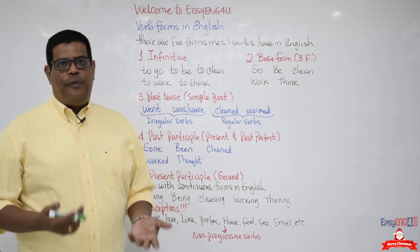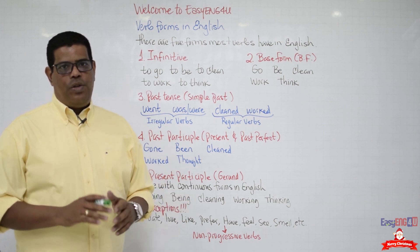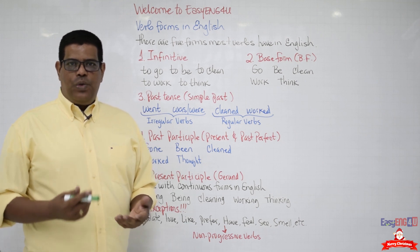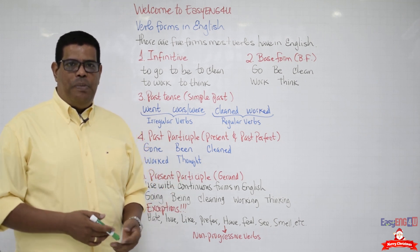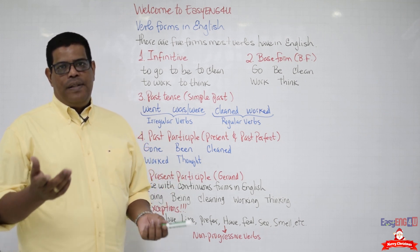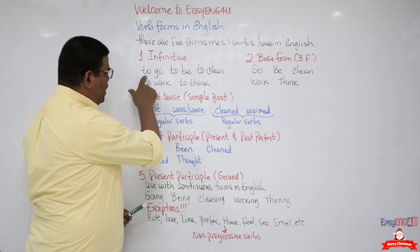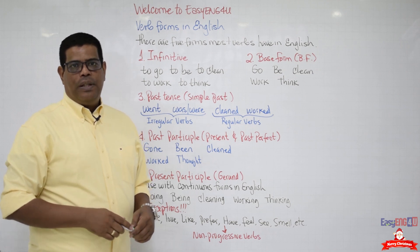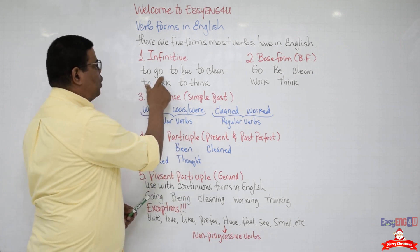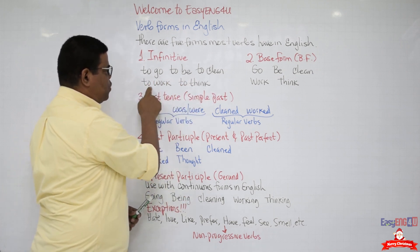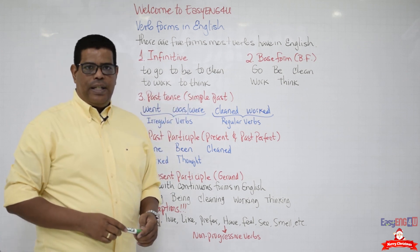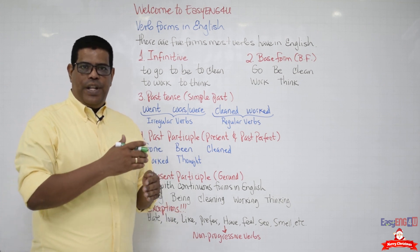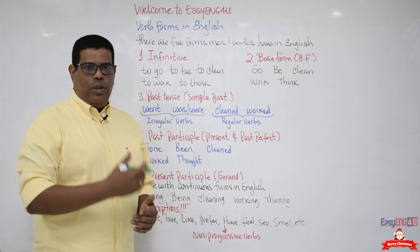The first verb form that I know for sure that you already know is what we call the infinitive. How do we identify a verb that is in the infinitive? Simple! Because we're going to see the particle 'to' before the verb. For example: to go, to be, to clean, to work, and to think.